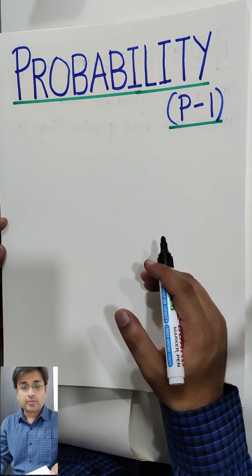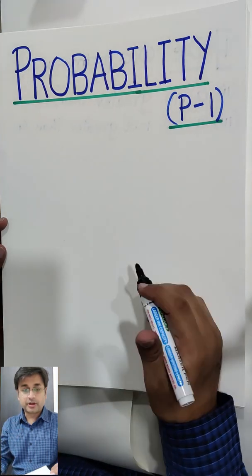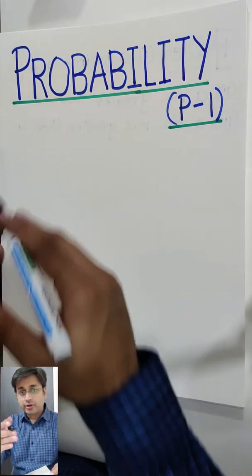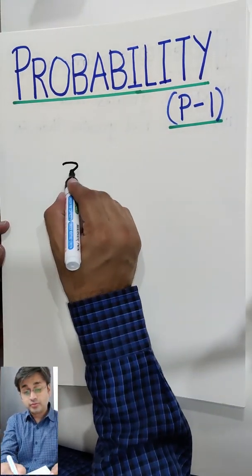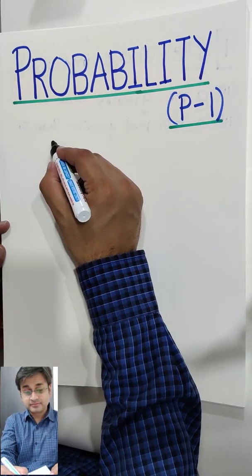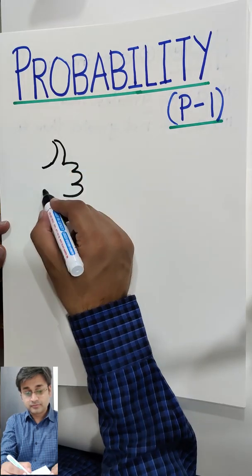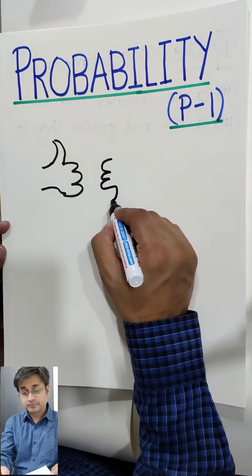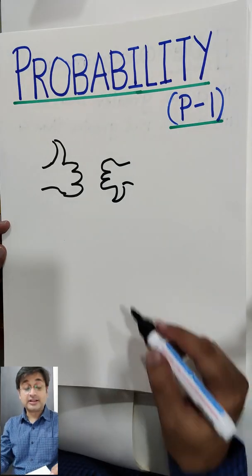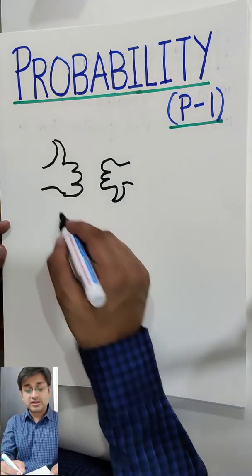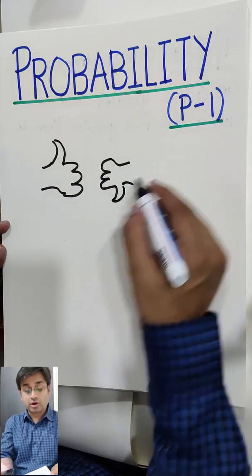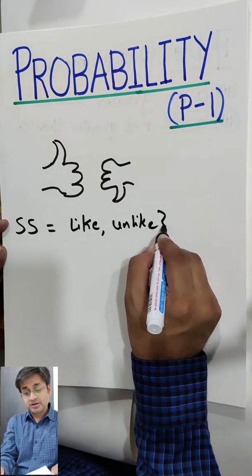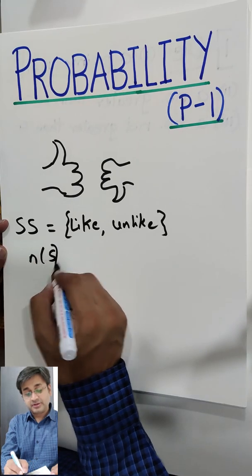We are breaking this entire topic in two parts — a very simple topic and a very scoring topic. What do you mean by probability? Probability is just a chance. For example, the video that I am making right now — will you like it or will you not like it? So, what are the total chances? Chance 1 is you like, chance 2 is you do not like. So we call that as the sample space — like and unlike — these are the two possibilities. So, number of sample space is 2.